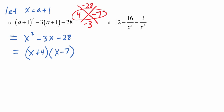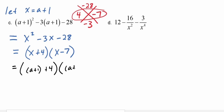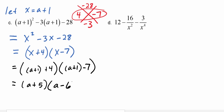Now it's time to substitute back for a, which was what the original trinomial was written in terms of. This becomes a plus 1 plus 4, times a plus 1 minus 7. Simplifying each factor gives us a plus 5 times a minus 6, and that is our final factorization.